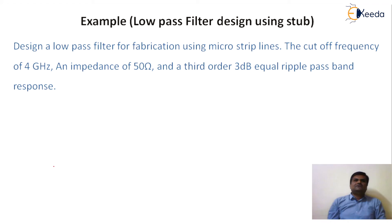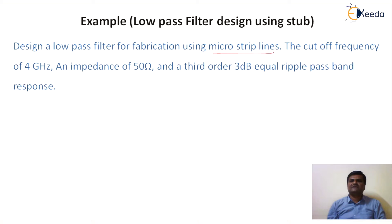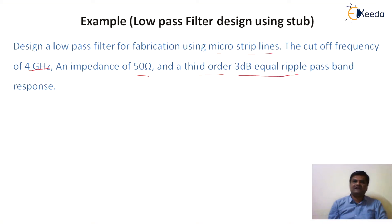This is the problem: design a low-pass filter for fabrication using microstrip line. The cutoff frequency is 4 GHz, impedance 50 ohm. It is a third-order, 3 dB equal ripple fast-band filter.